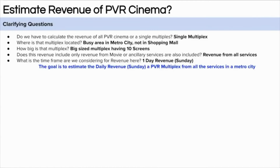First, let's ask clarifying questions. PVR cinema is an Indian multiplex chain. We can ask: does this include all multiplexes in the chain or a single multiplex? Let's assume a single multiplex. We should clarify where it is located, since a busy area means higher occupancy. Let's assume it is in a metro city in a busy area and not inside a mall, so we need to consider valet parking revenue as well.